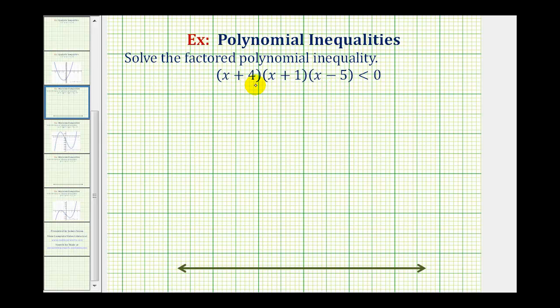We want to solve the polynomial inequality which is given in factored form. To solve this means to find all the x values for which this product on the left is less than zero. We'll solve this by hand and also check it graphically.